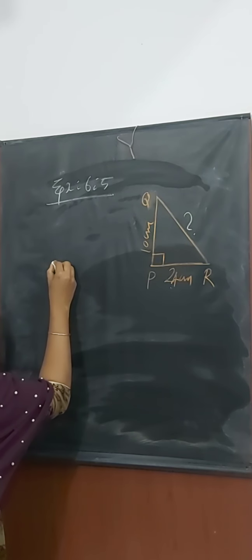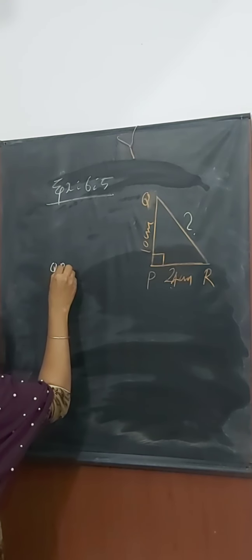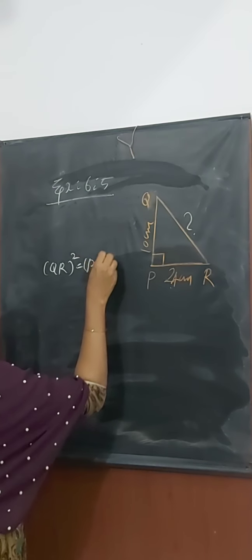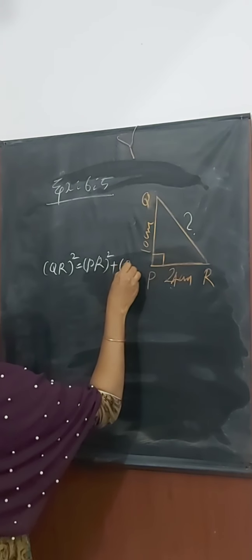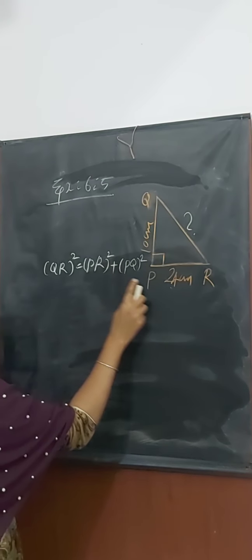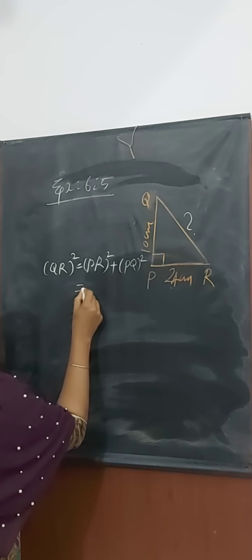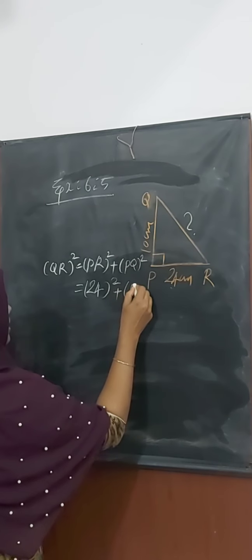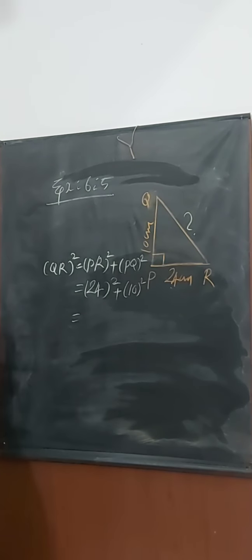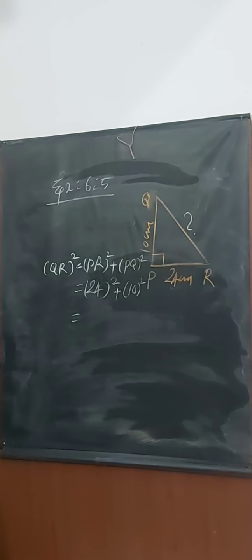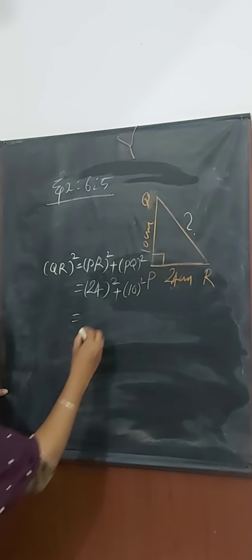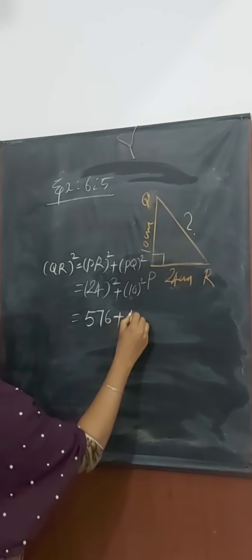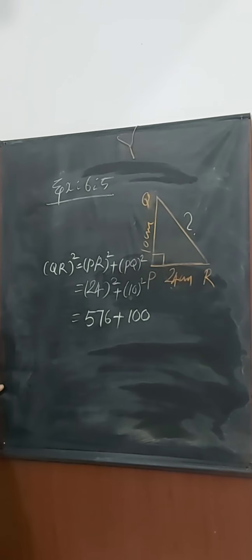By the Pythagoras property, QR square equals 24 square plus 10 square. 24 square means 24 into 24, we get 576 plus 10 square means 10 into 10, we get 100.